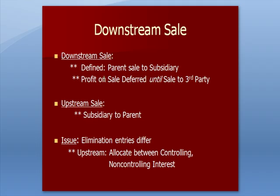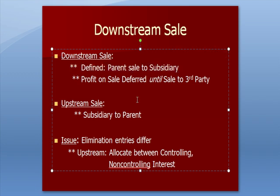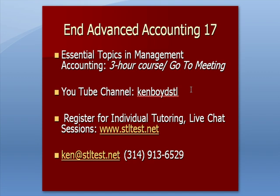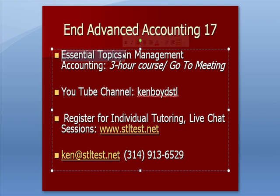Wrapping up in Excel: a downstream sale is defined as parent to subsidiary, and recognizing the sale is deferred until it's sold to a third party. An upstream sale is the other direction — from the subsidiary, in my example Hollywood, to a parent. The elimination entries differ only in that on the upstream sale we allocate the profit between the controlling and the non-controlling interest. That's the end of Advanced Accounting 17. We have our hour-long Essential Topics courses you can access with Management Accounting, Financial Costs, and other courses including Intermediate. Here's our YouTube channel, Ken Boyd STL, all one word, for one-on-one tutoring in small groups using GoToMeeting.com. Here's our website, our email, and our phone number. Thanks very much and we'll see you next time.